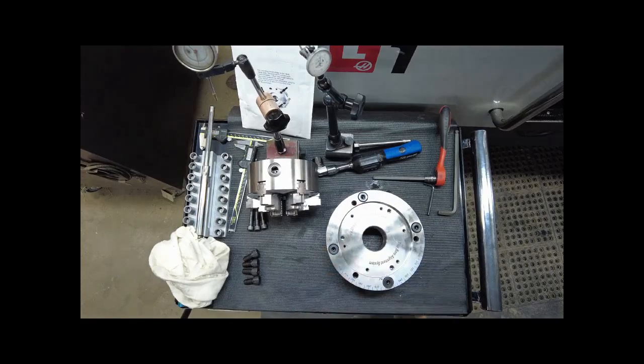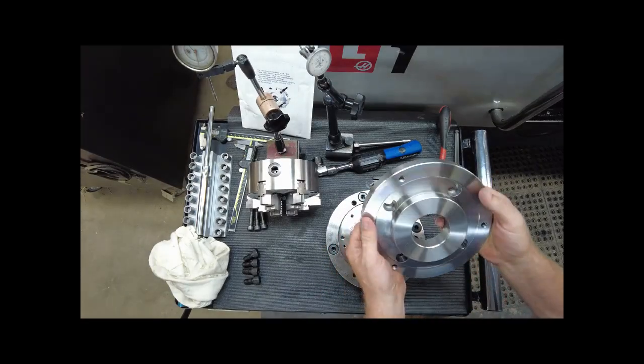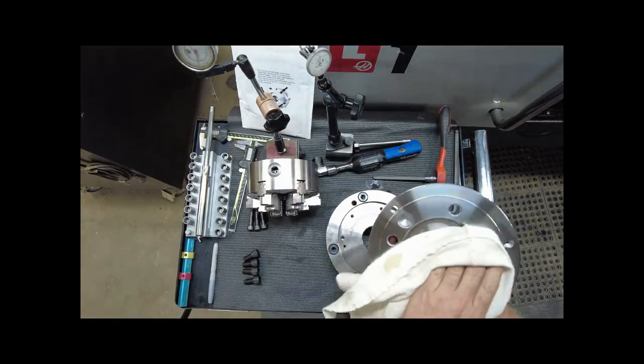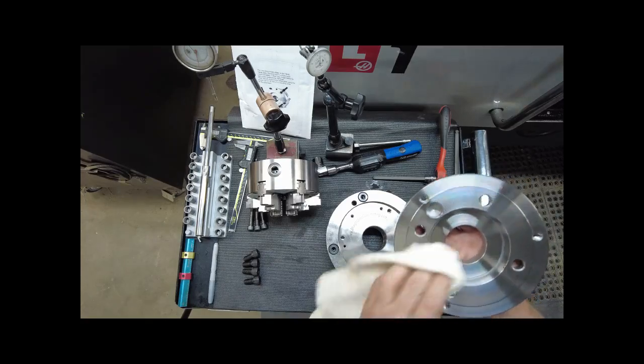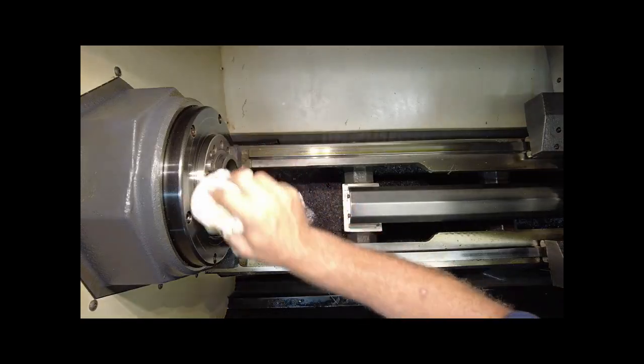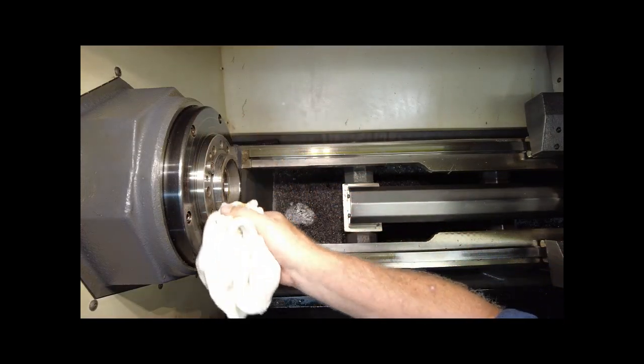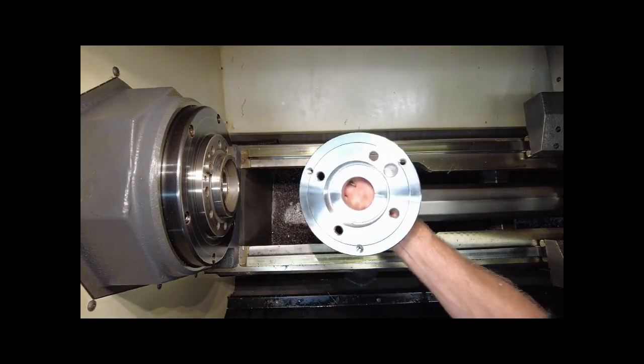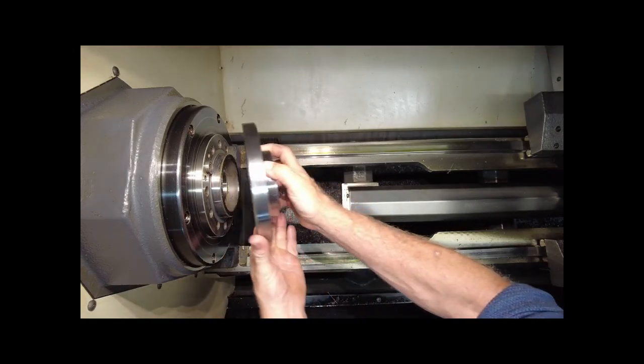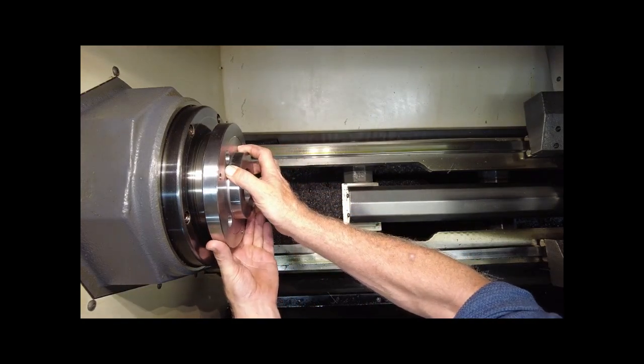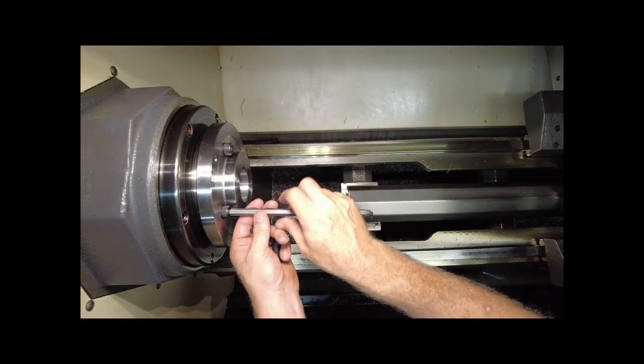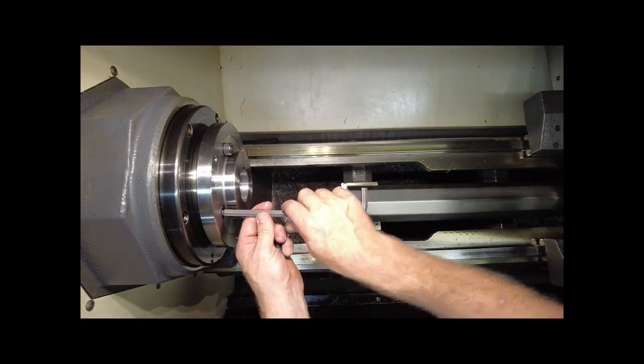Next install spindle adapter on the lathe. Make sure mating surfaces are ultra clean. The spindle adapter can only be installed at one rotation.